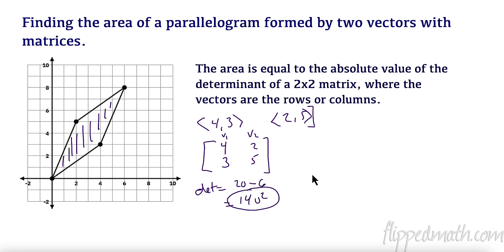Now, it doesn't matter which is first. Let's put 2, 5, and 4, 3 here and see if it matters which is first. 2 times 3 is 6 minus 20. Ooh, that gives me negative 14. Ah, that's why it's really important here, this word right here, absolute value. So, the absolute value of that would be 14 or 14 units squared of the area.